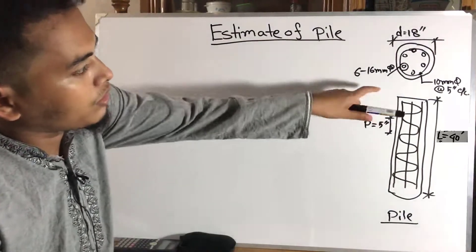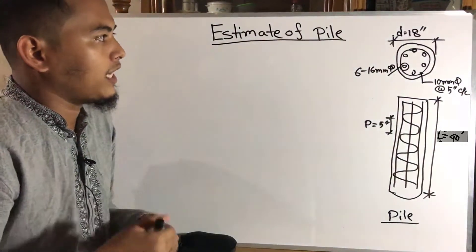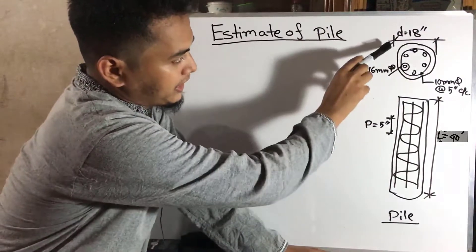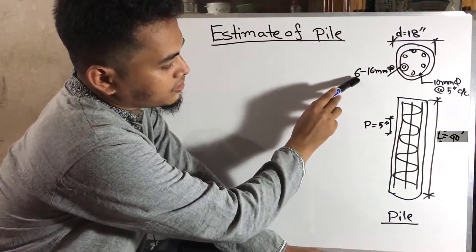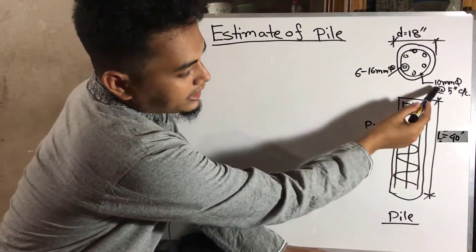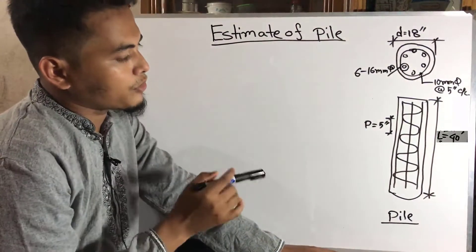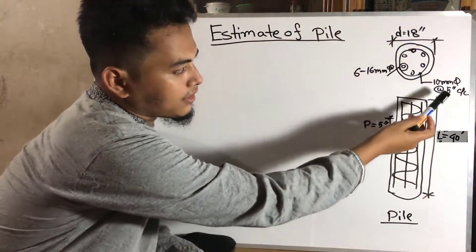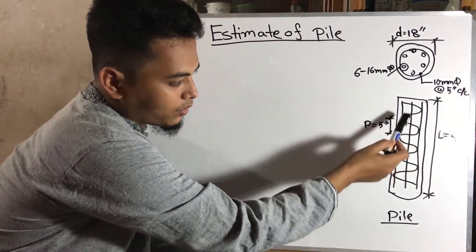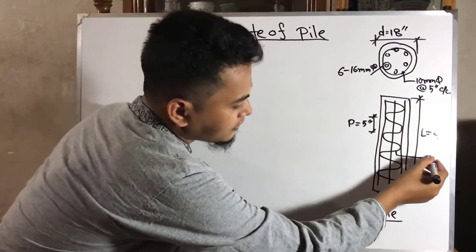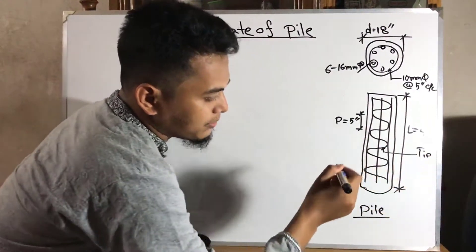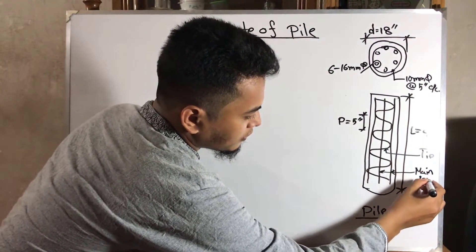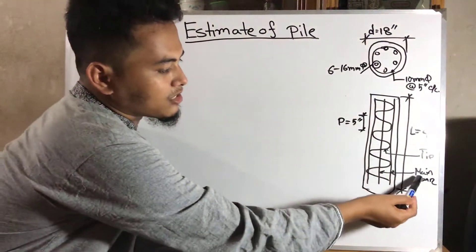This is the pile cross section and this is the pile long section. Some data is given: the diameter of the pile is 18 inches, the main bar is 6 nos. of 16 mm diameter, and the tie bar is 10 mm at 5-inch center to center. The length of the pile is 40 feet. These are the main bars and tie bars shown in the long section and cross section.